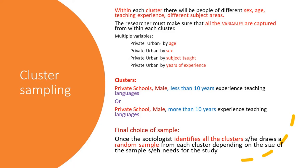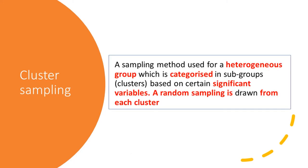What would be the final choice of sample that the researcher would consider? Once the researcher identifies all the clusters, she could draw a random sample from each cluster depending on the size of the sample needed for the study. A good definition of cluster sampling would be: a sampling method used for a heterogeneous group which is categorized into subgroups — clusters — based on certain significant variables, and a random sample is drawn from each cluster.